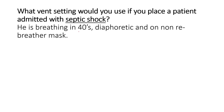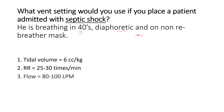Now we have a patient with septic shock who is breathing in the 40s, likely because he is quite acidotic. He is diaphoretic and on quite a bit of oxygen. For this patient you would use 6 cc per kg tidal volume, a higher respiratory rate trying to match the breathing pattern prior to ventilation, a fast flow rate, a PEEP of 8, and FiO2 of 100%.